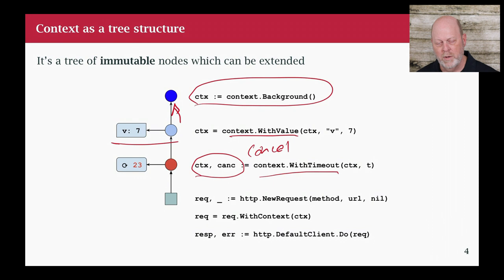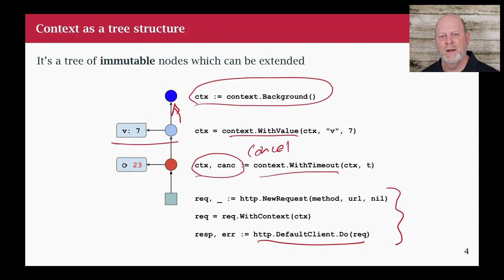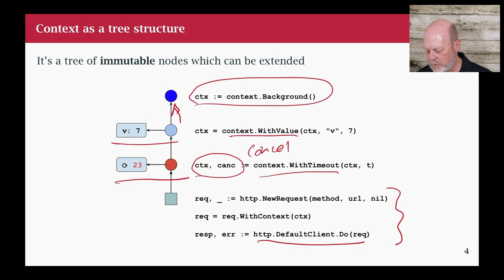That means I've passed that timeout down into Go's HTTP library. When time goes off, if the request isn't done, it will be canceled - buried deep inside the HTTP library, but it'll happen for us. This is an example of how it works - it's an immutable tree structure. Once I've laid down a node with this timeout, it doesn't change. I can add another child under it, but I can't change that node or its parents. They're fixed.